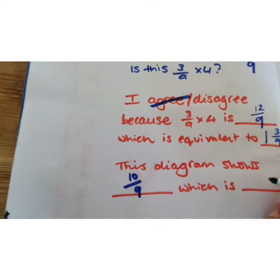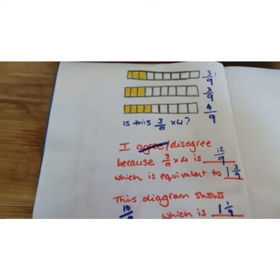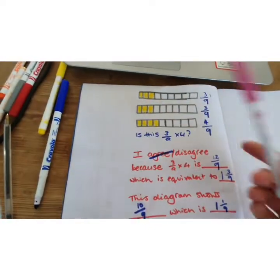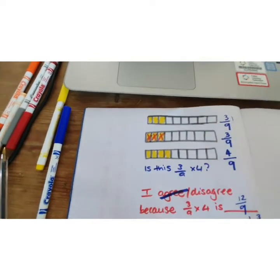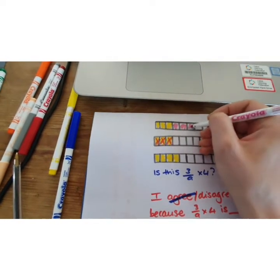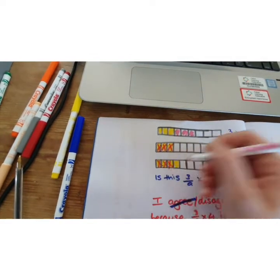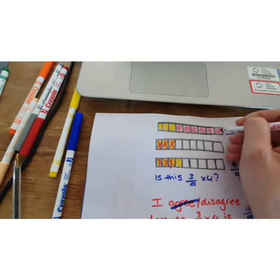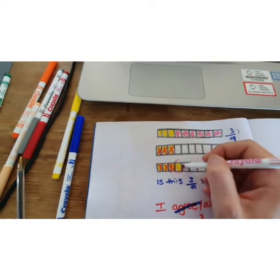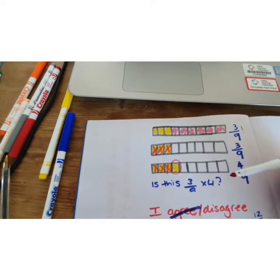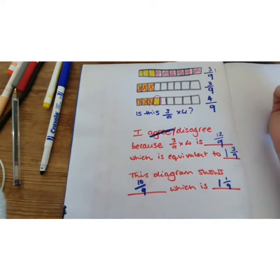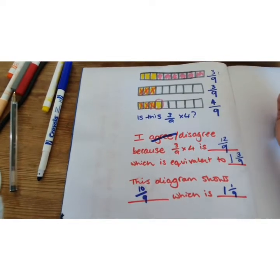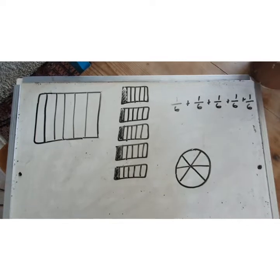This diagram actually shows one, two, three, four, five, six, seven, eight, nine, ten ninths — so it shows ten ninths, which is equivalent to one whole and one ninth. Moving the yellow blocks to show this: I take three parts from one rectangle and move them to fill the top rectangle, then take three more, giving one whole rectangle and one ninth. That is not equivalent to twelve ninths, which is one whole and three ninths.